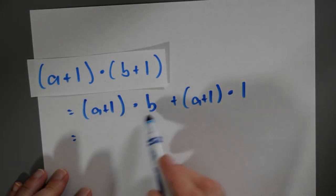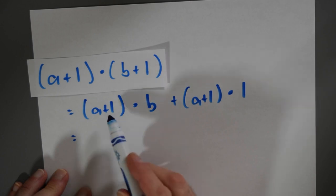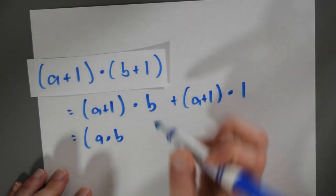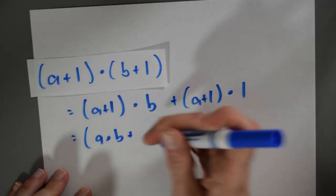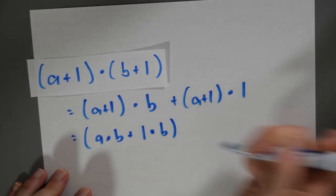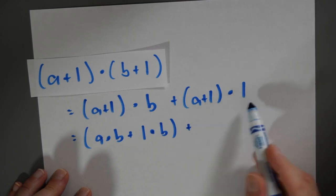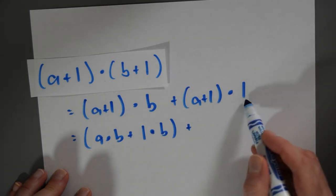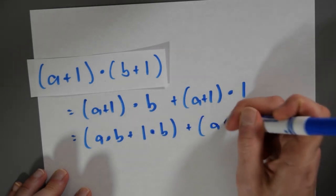So this multiplication distributes over this addition. So this is a·b + 1·b. And I've got the multiplicative identity here, I'm multiplying by 1, so I'll just write this as a+1.